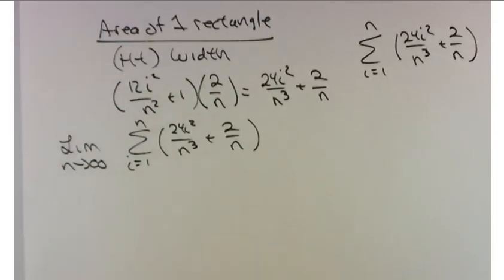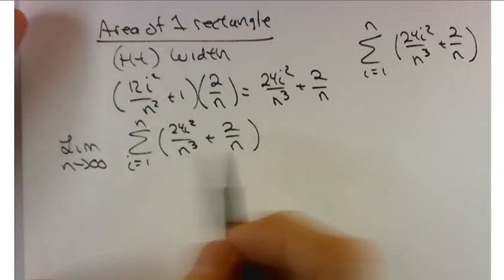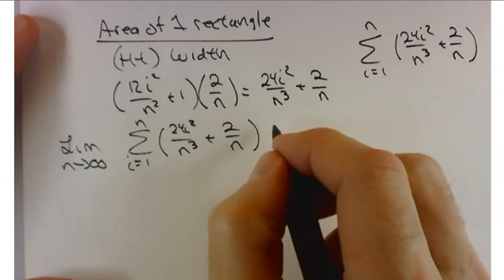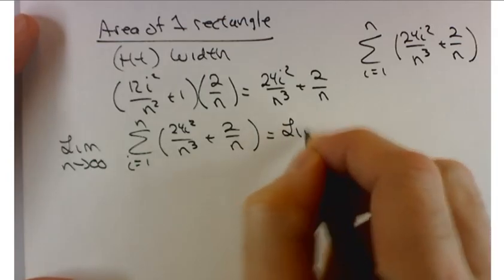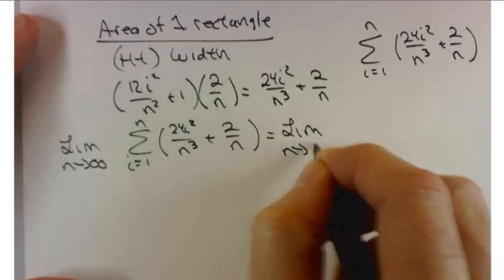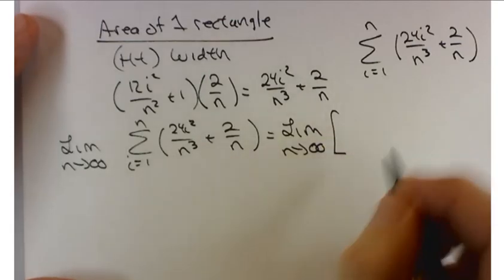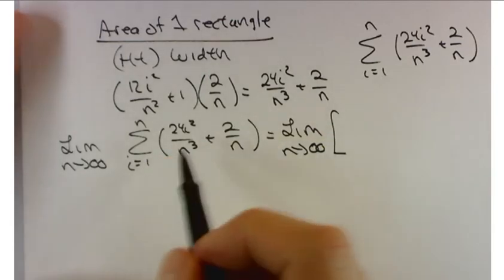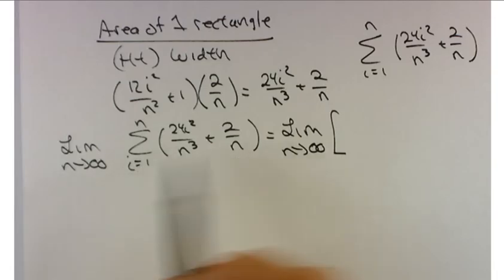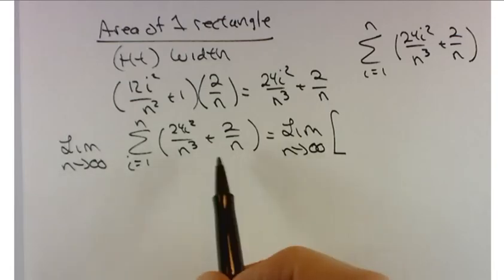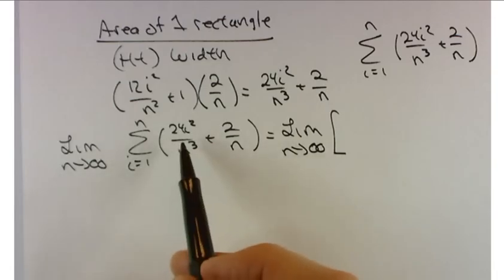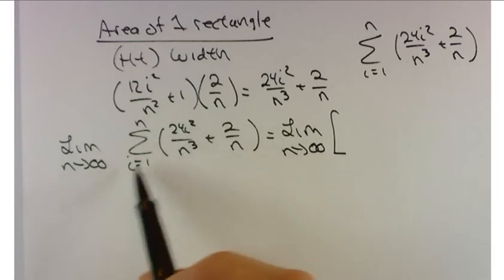Sum from i equals 1 to n of 24i² over n³ plus 2 over n. And here's where we're going to try and use our formulas. So let me split this up a little bit. I'm going to split this up into the limit as n approaches infinity. I'm going to split that summation up into two sums.